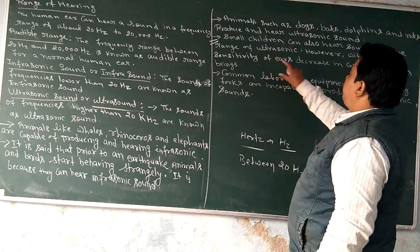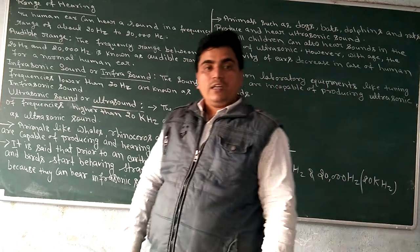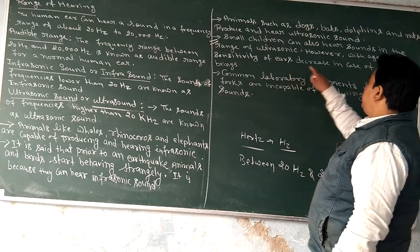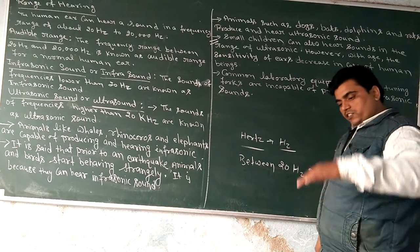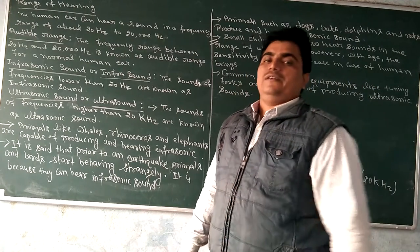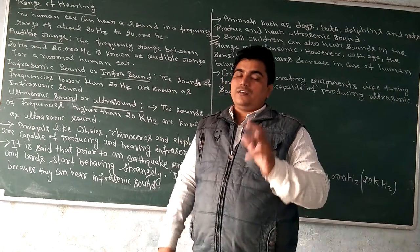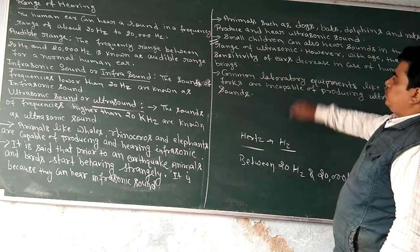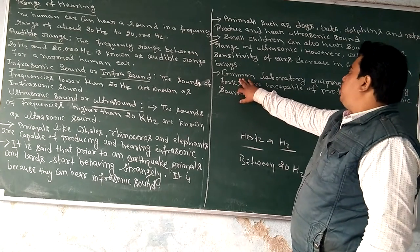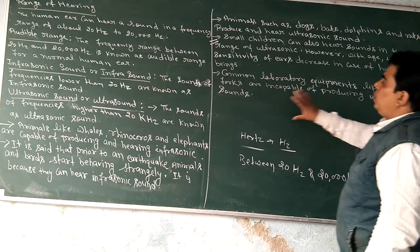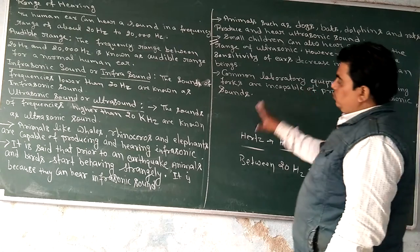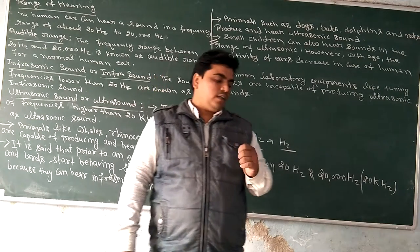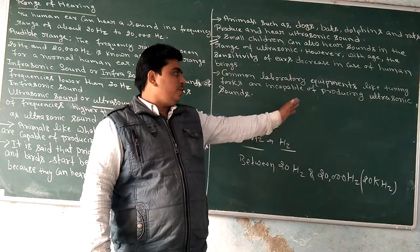The sensitivity of the ears is more developed in children compared to adults. With age, the sensitivity of the ear decreases, and that is why adults cannot hear ultrasonic sound, while small children can. Also, common laboratory equipment like a tuning fork is incapable of producing ultrasonic sounds.